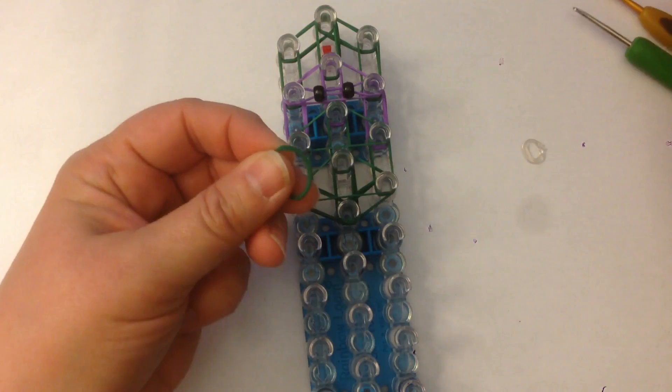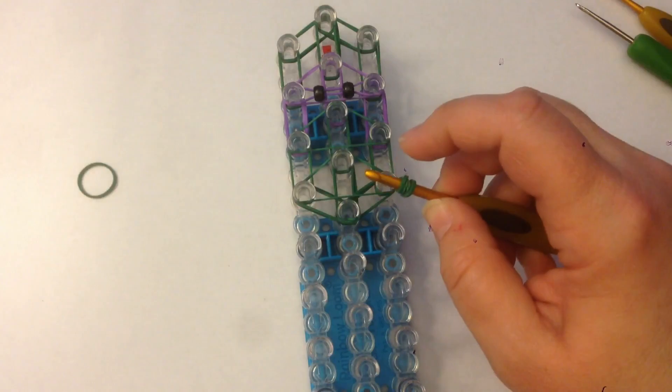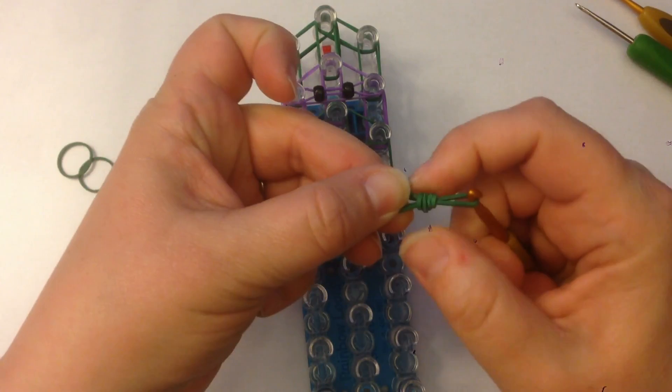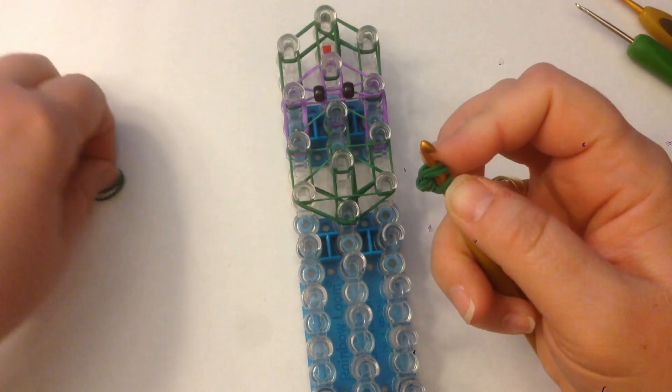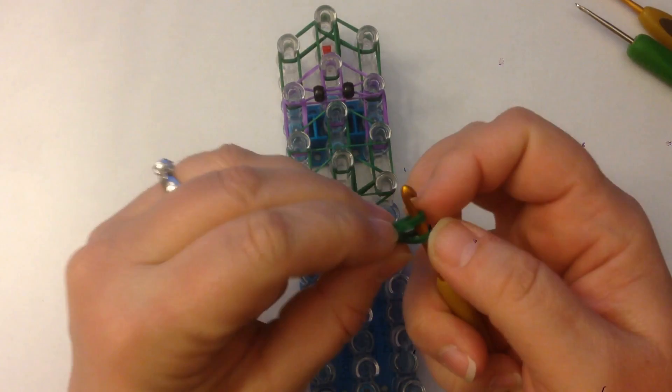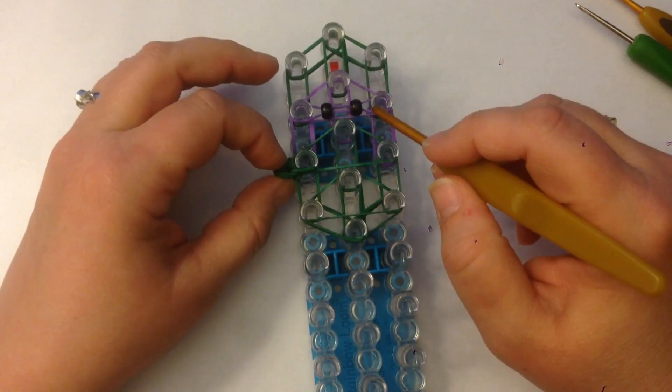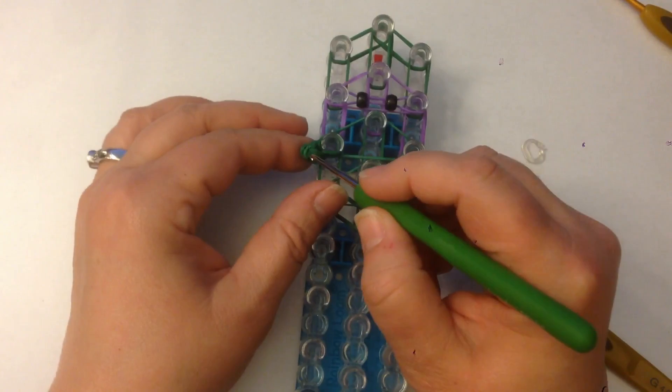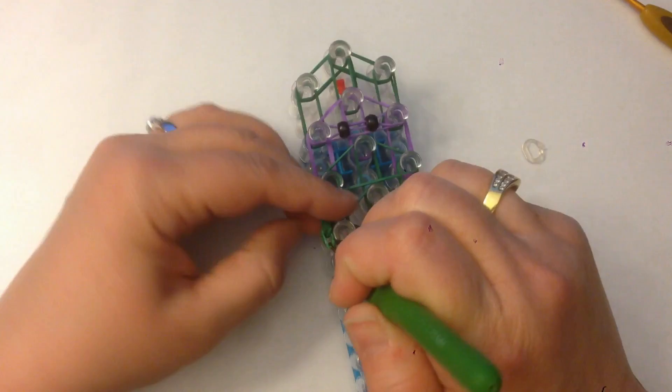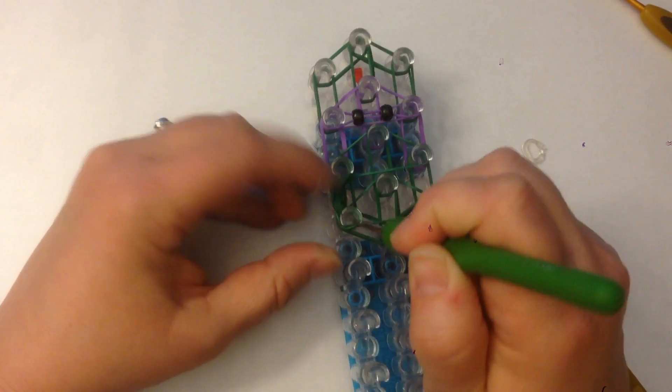Taking a single band, wrap it around your hook once, twice, three times. We're going to take a pair of green and slide those on like that. Move that into the middle and reclaim your bands. We're going to do that again. This is to give him little chubby turtle cheeks. We're going to place this on this peg here at the bottom of where we start our purple.